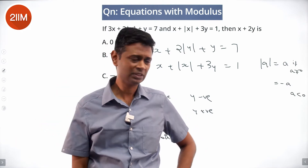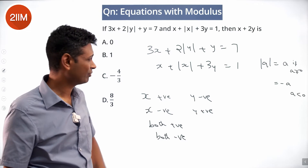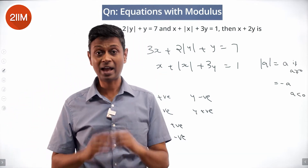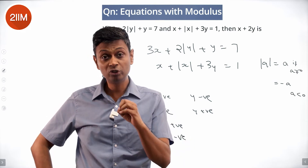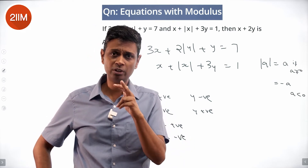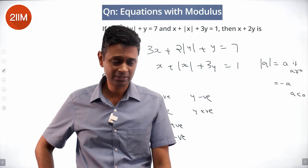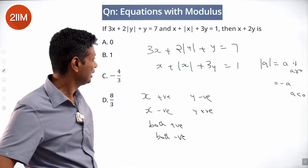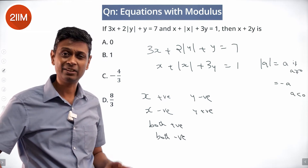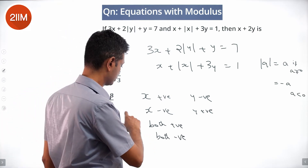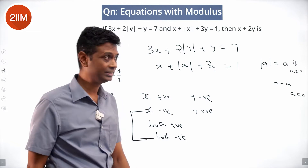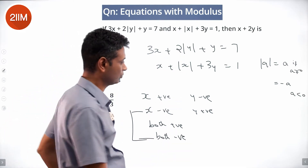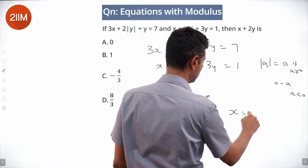Now, one other thing we can notice: x + |x|. If we add x and |x|, it equals 0 when x is negative. So maybe there's something there. Let's try putting x as negative in the second equation — that term x + |x| goes to 0.